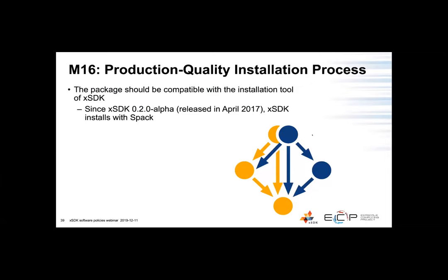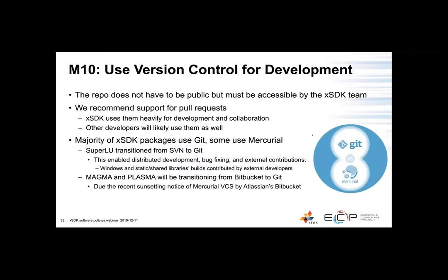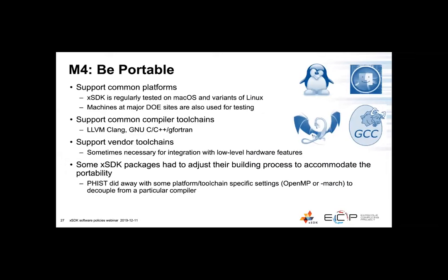Q&A: Regarding mandatory policy number four (M4), what is the procedure to get access to DOE machines for testing candidate packages? There are various programs that allow access to DOE machines — Exceed and INCITE programs are options. Another way is to contact the XSDK developers directly, as we often test packages before they join XSDK. Also, most facilities have startup accounts, for example at NERSC, which would be a good way to get access.